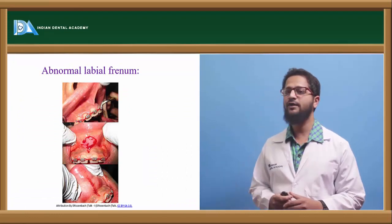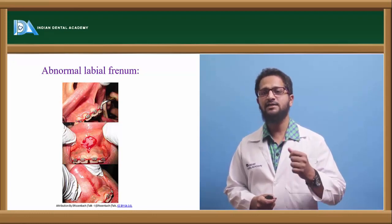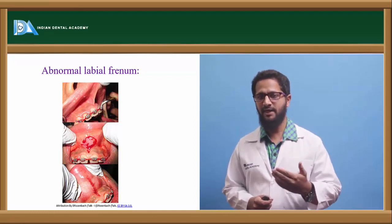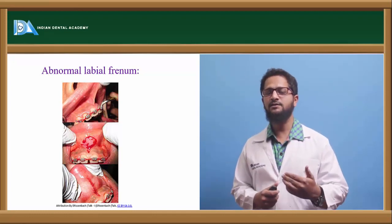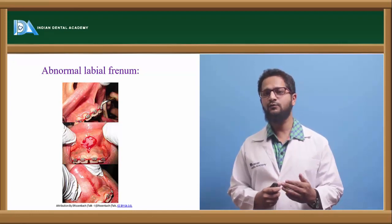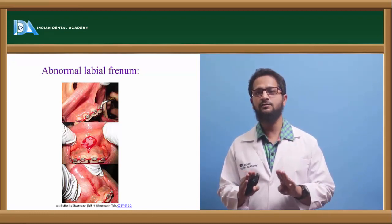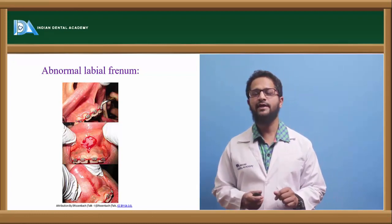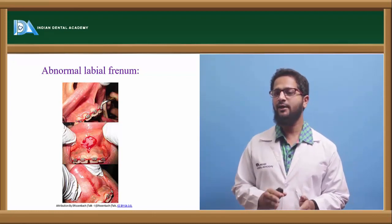Regarding abnormal labial frenum: prior to eruption of teeth, the labial frenum is attached at the incisive papilla region, with fibers crossing the alveolus and inserting on the palatal aspect. As teeth erupt, this attachment normally moves up. But sometimes it does not move, and a thick labial frenum persists between the two central incisors, preventing them from coming close together and resulting in a midline diastema. This abnormal labial frenum is identified by the blanch test and corrected by a frenectomy procedure.